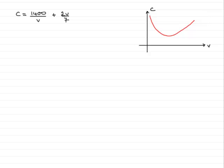And we've got this minimum cost occurring here. And we've got to find out the value of V, this value here, that makes this a minimum.